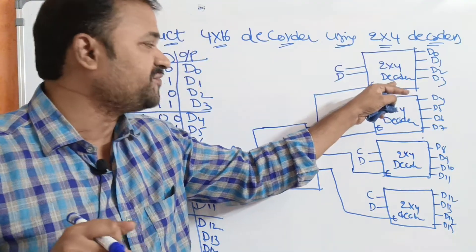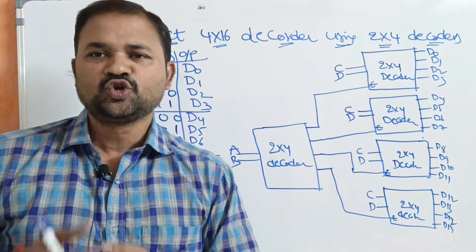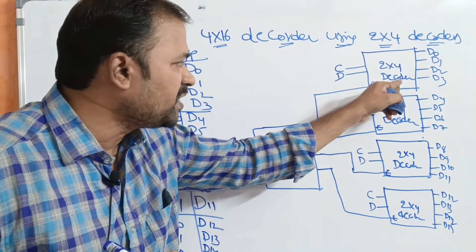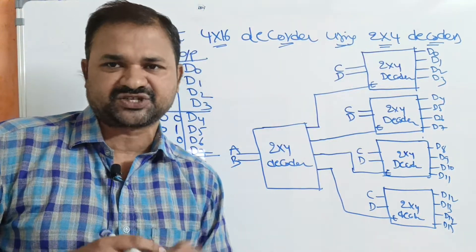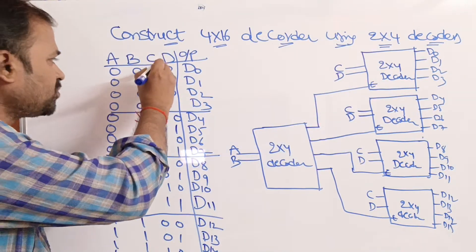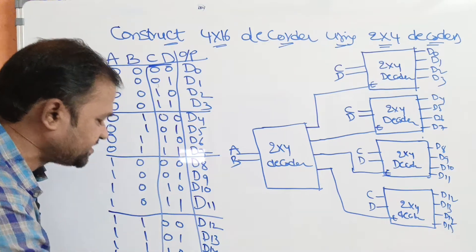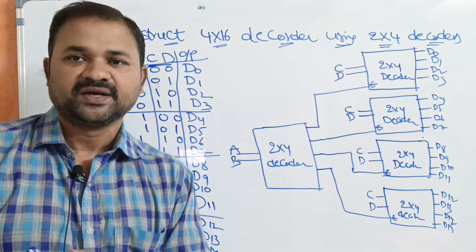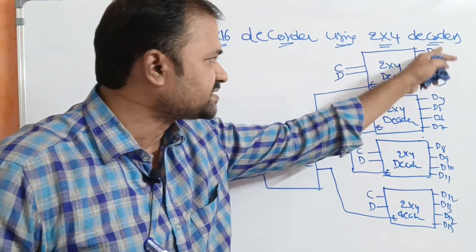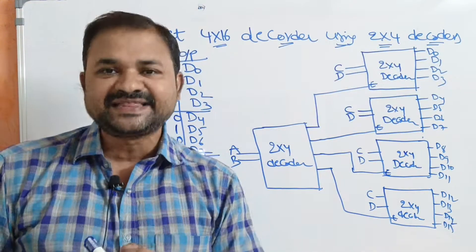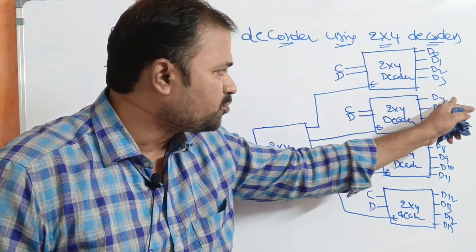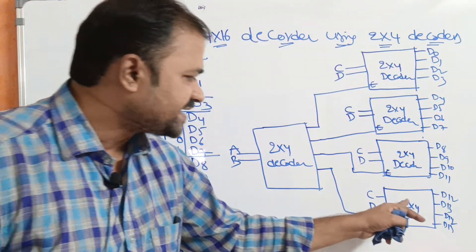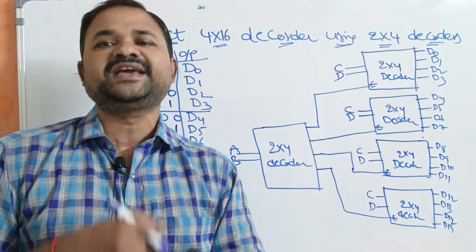The first 2 by 4 decoder accepts 2 inputs and produces 4 outputs. For all the 2 by 4 decoders, the inputs are C and D only. The first 2 by 4 decoder produces 4 outputs from D0 to D3. The second 2 by 4 decoder produces outputs from D4 to D7. The next produces outputs from D8 to D11, and the next produces outputs from D12 to D15.